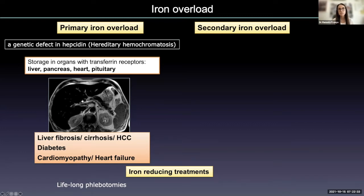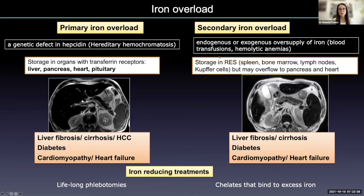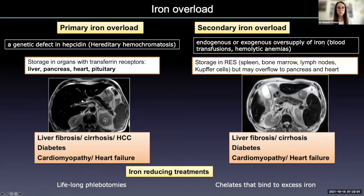On the other hand, patients with secondary iron overload usually have an endogenous or exogenous oversupply of iron, mainly from chronic blood transfusions or hemolytic anemia. Iron is stored mainly in the reticuloendothelial system, but may also overflow to the pancreas and heart. These patients may also develop complications and are treated with chelators that bind the excess iron.